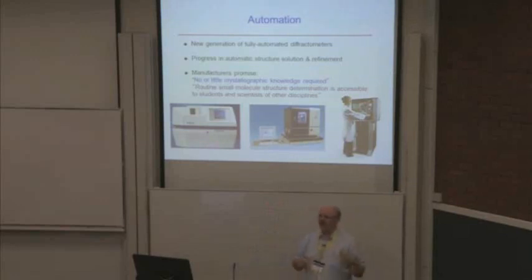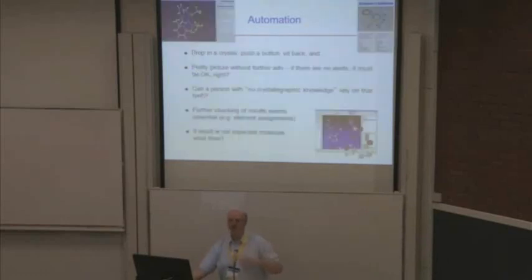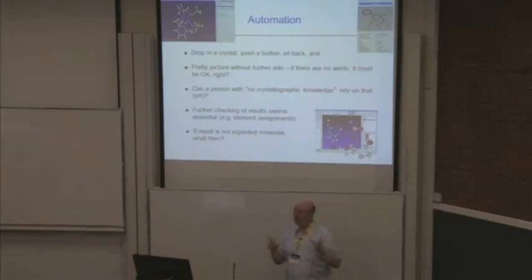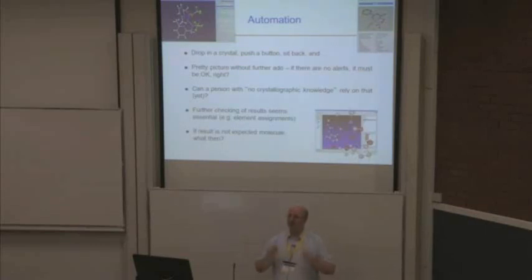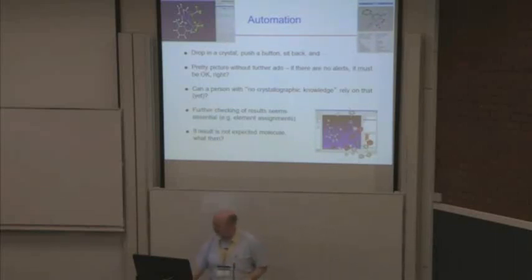Another issue is the generation of new fully automated instruments. The diffractometer companies like to sell the idea that you can just drop a crystal in and get a pretty picture out without much experience. But on my diffractometer, I have one of these automated structure solution and refinement tools — it works really well, but a certain percentage of structures it still gets element assignments mixed up. It's not always possible to distinguish carbon and nitrogen, so you need expertise to make sure it's doing the job correctly.